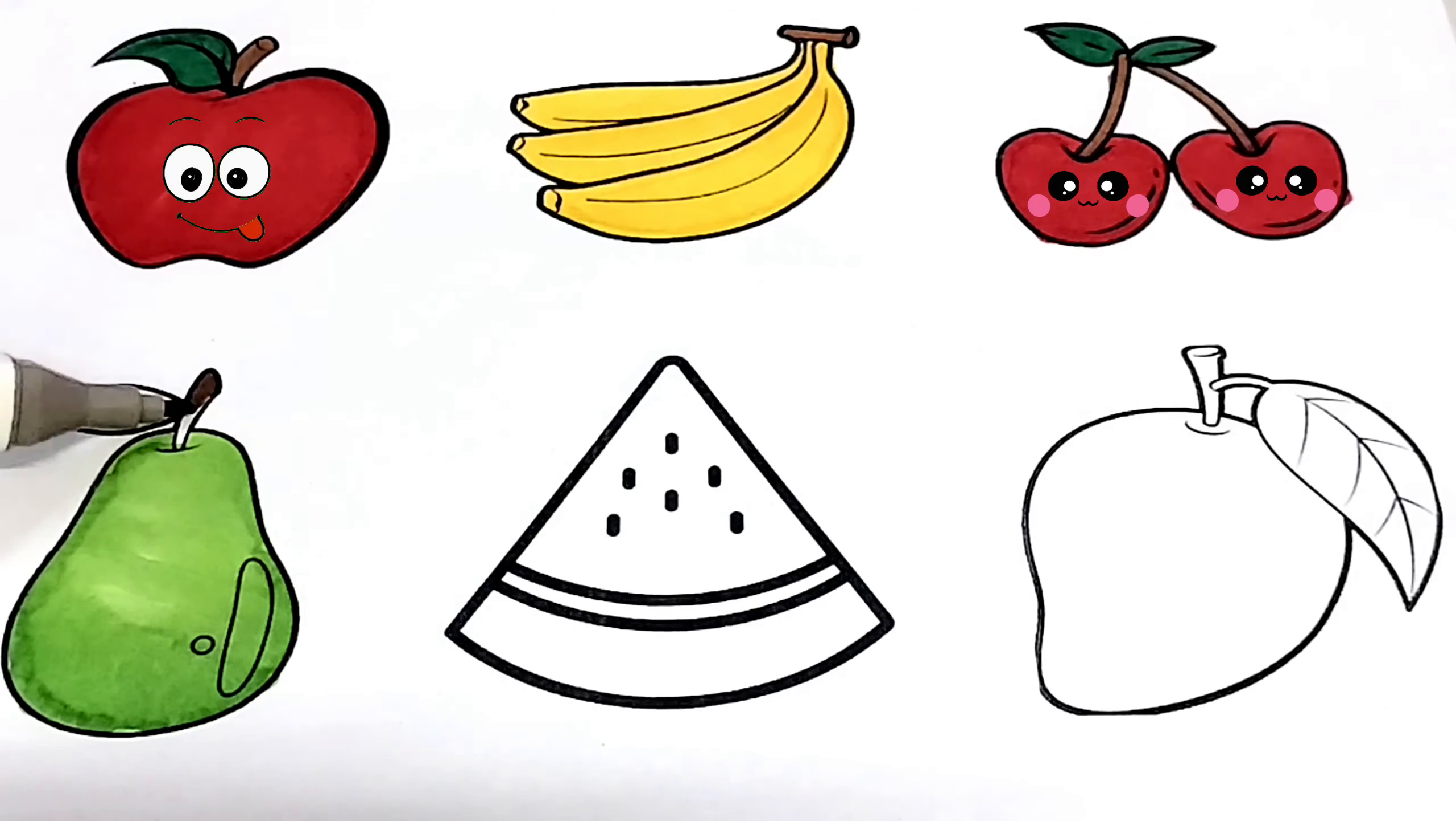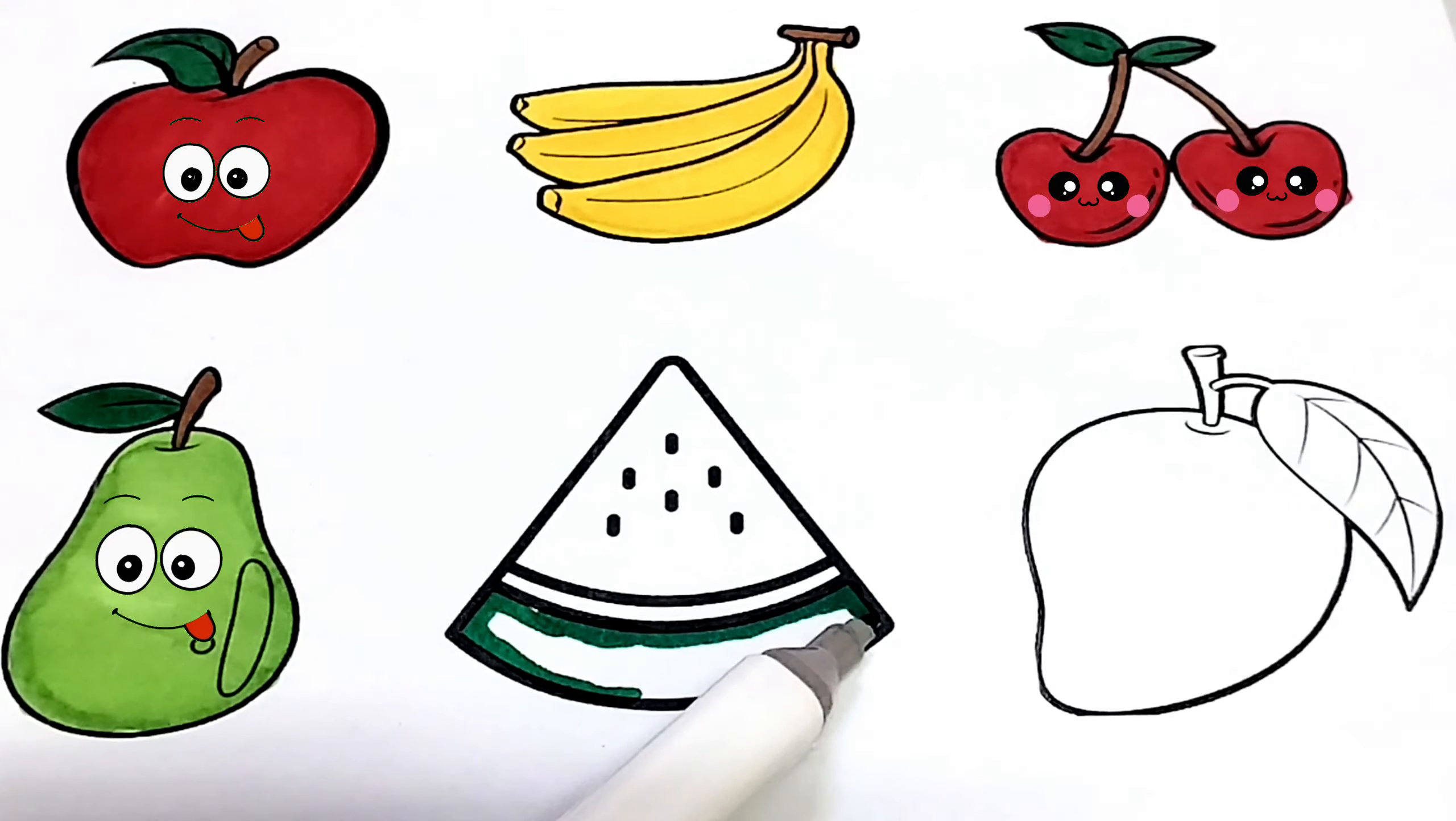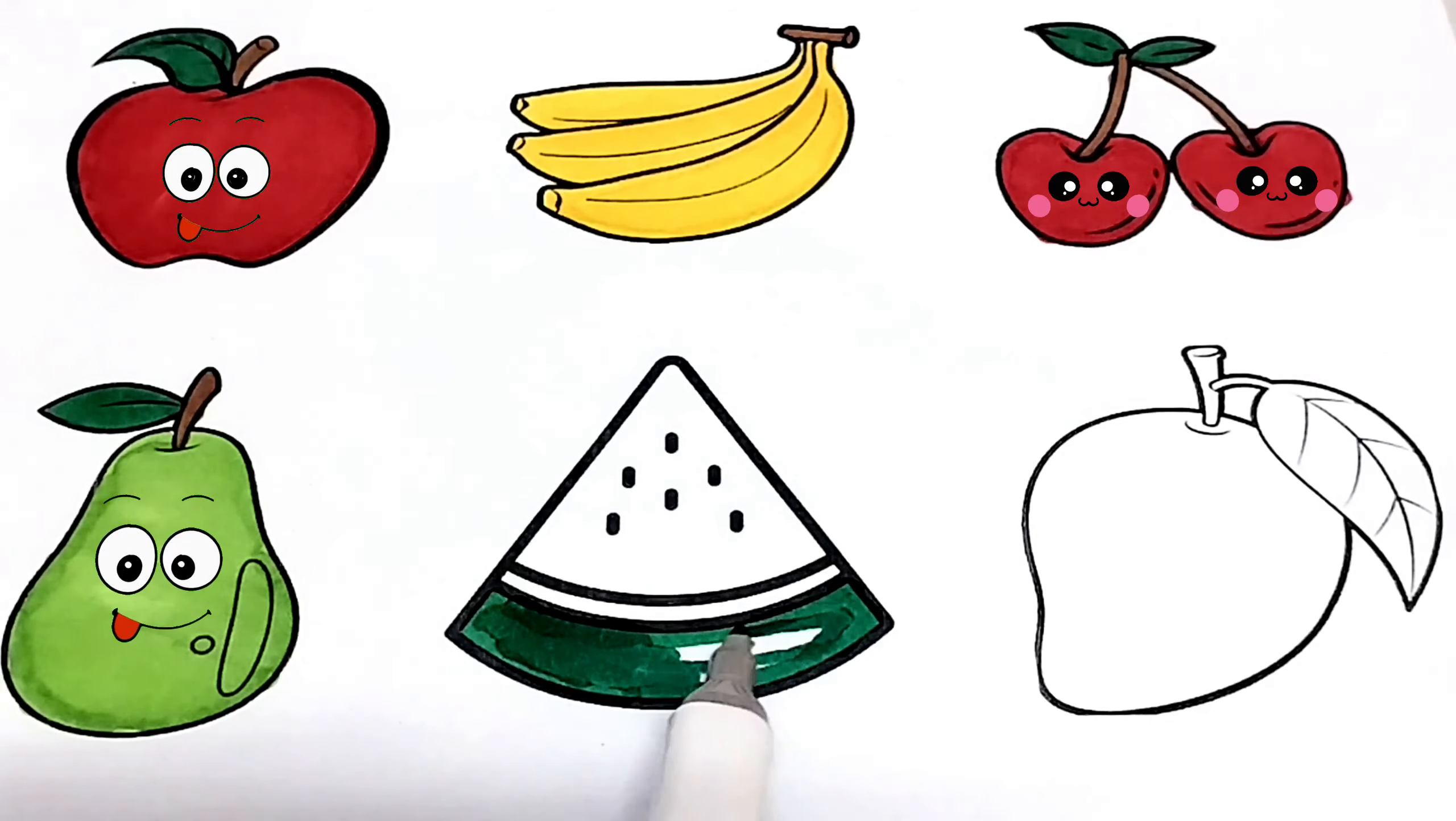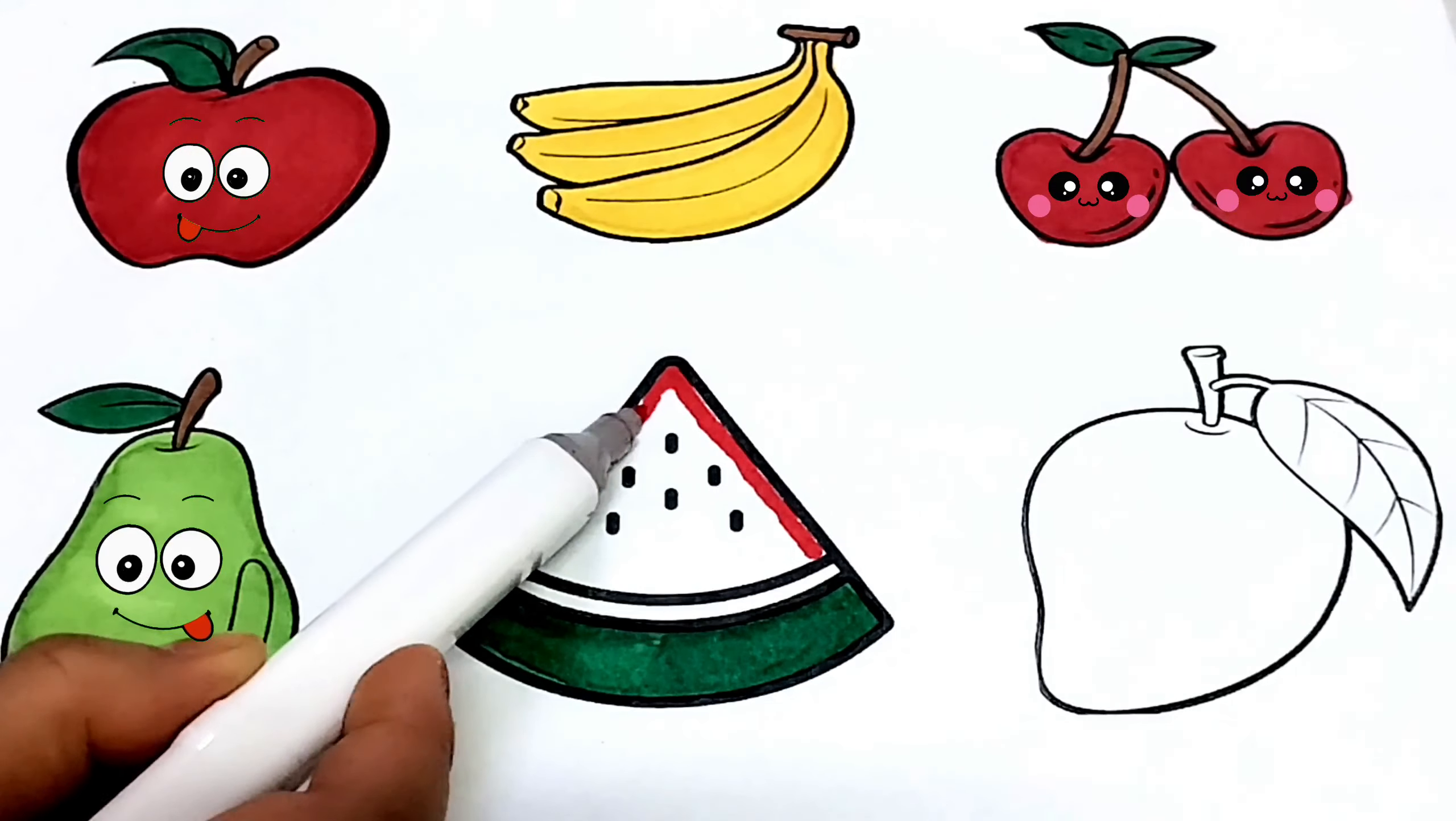I am coloring brown color, I am coloring green color. Do you know which fruit is this? Yes, it's watermelon. I am coloring green color. I am coloring red color in the pulp of watermelon.